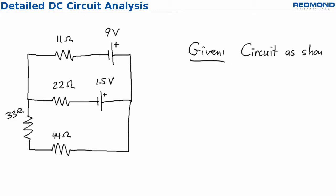Given this circuit with two voltage sources and four resistors, find the current through each resistor. The same current flows through the 33 ohm and 44 ohm resistors, so there are three unknown values to solve for.